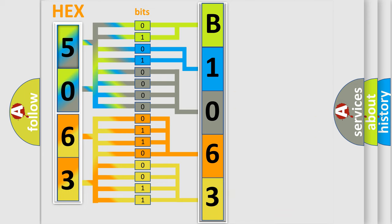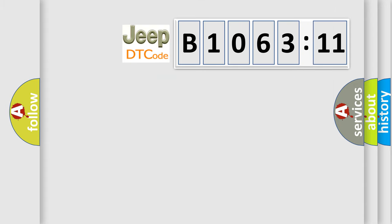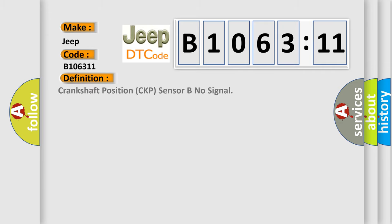We now know in what way the diagnostic tool translates the received information into a more comprehensible format. The number itself does not make sense to us if we cannot assign information about what it actually expresses. So, what does the diagnostic trouble code B106311 interpret specifically for Jeep car manufacturers? The basic definition is crankshaft position CKP sensor B no signal.